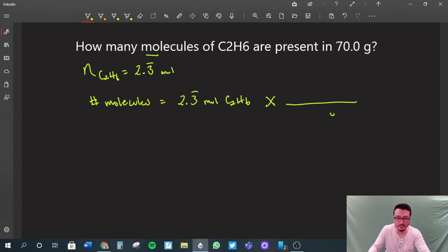The unit you want to get rid of goes at the bottom. We want to get rid of moles. So we write moles of C2H6, and the unit we want to keep—the number of molecules—is at the top. Hopefully this rings a bell.